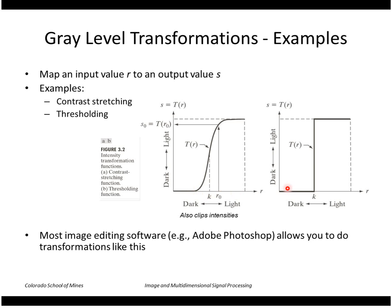In the extreme, we have a step edge like this, in which case the values of r are mapped to either zero or one or the maximum. That essentially does a thresholding. Most image editing software, like Adobe Photoshop, allows you to do transformations like this where you can sketch the arbitrary curve that you want to use for your transformation.